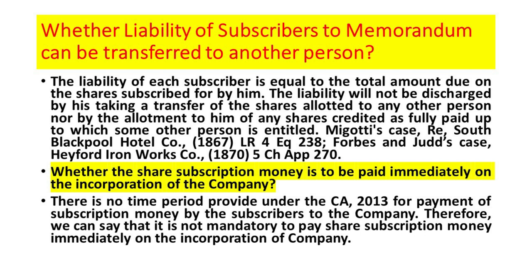Whether the liability of subscribers to the memorandum can be transferred to another person: the liability of each subscriber is equal to the total amount due on the shares subscribed for by him. The liability will not be discharged by his transferring the shares allotted to any other person, nor by the allotment to him of any shares credited as fully paid up to which some other person is entitled. This is laid down in various English cases — Mygod's case (South Blackpool Hotel Company, 1867) and Forbes and Judd's case (Hayford Ironworks Company, 1870).